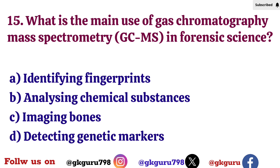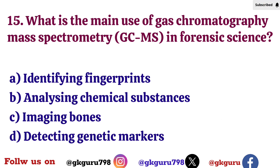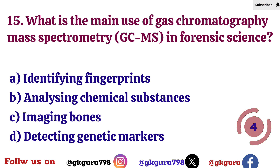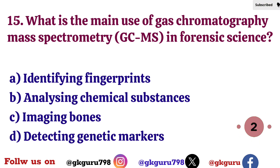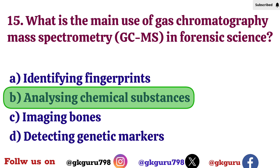Fifteenth question: What is the main use of gas chromatography mass spectrometry (GCMS) in forensic science? Option A: Identify fingerprints. Option B: Analyzing chemical substances. Option C: Imaging bones. Option D: Detecting genetic marks. Correct answer: Option B — Analyzing chemical substances.